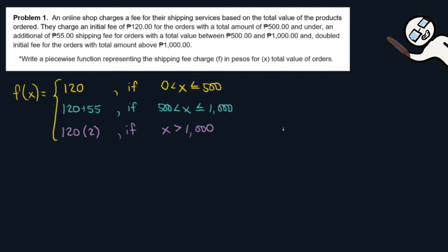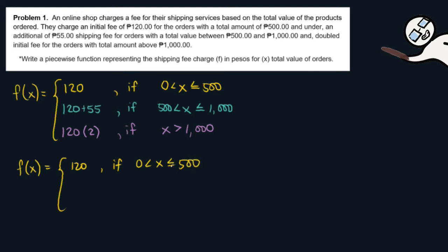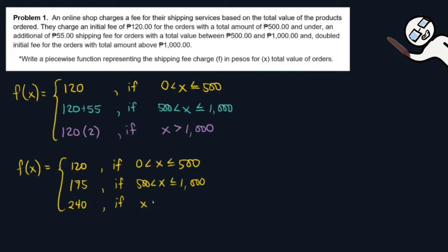So, this is our piecewise function. We can simplify it: F(x) equals 120 if x is greater than 0 but less than or equal to 500; then 175 if the total value of orders is between 500 and 1000, including 1000; and 120 times 2 is 240 pesos if the total value of orders is above 1000 pesos. This is our first problem.